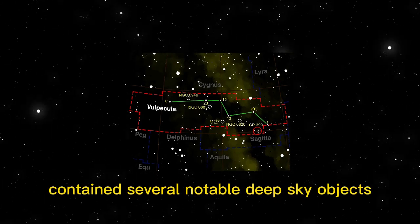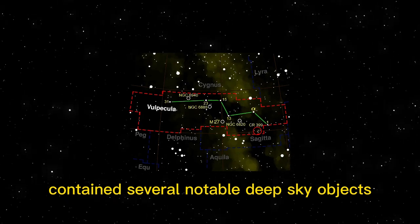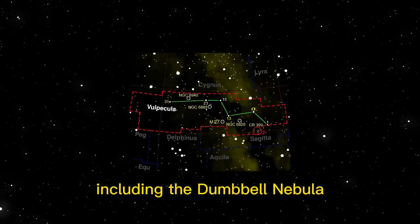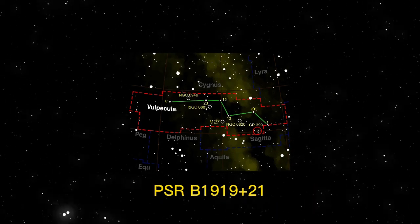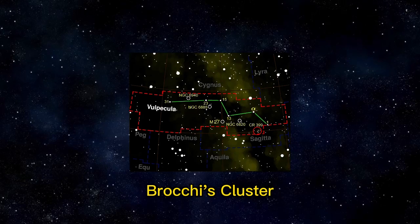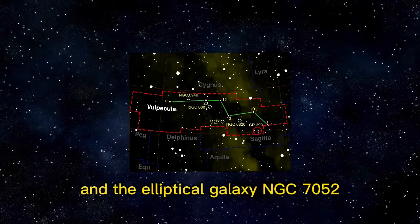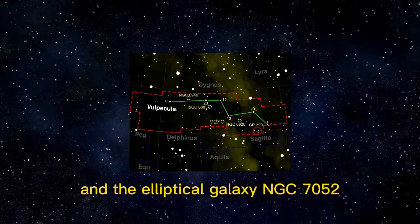The constellation contains several notable deep sky objects, including the Dumbbell Nebula (Messier 27), the first pulsar ever discovered (PSR B1919+21), Brocchi's Cluster, and the elliptical galaxy NGC 7052.